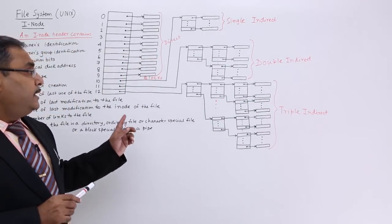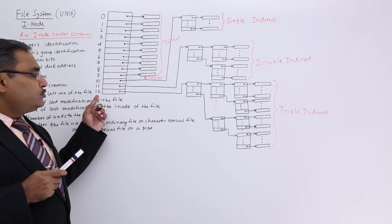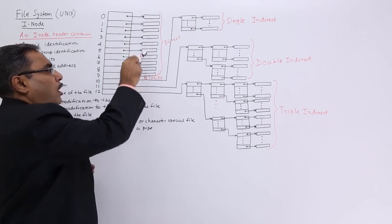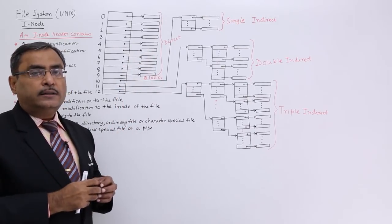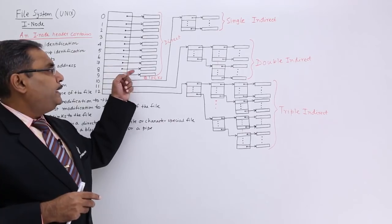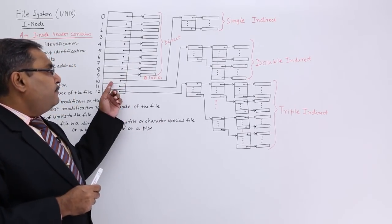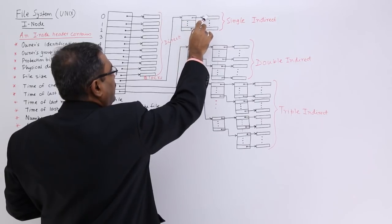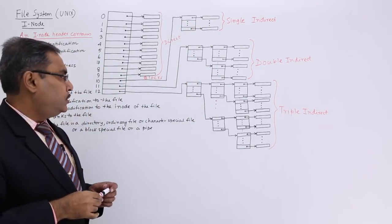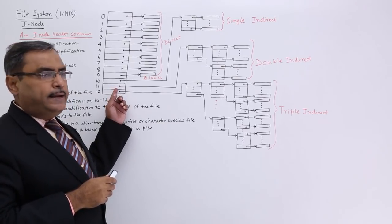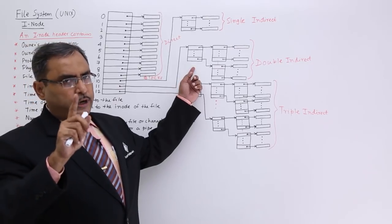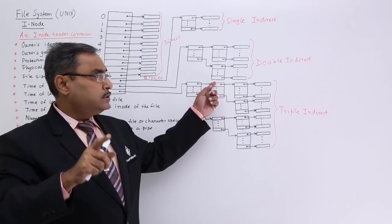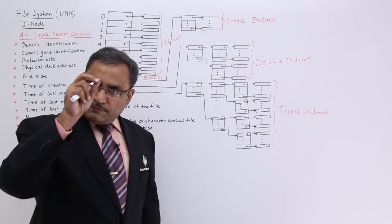The inode data structure has 13 fields numbered 0 to 12. The first 10 fields (0 to 9) contain direct block addresses — pointers directly to the blocks containing the file's data. Field 11 contains the single indirect block address, pointing to an index block which then points to the actual physical data blocks. Field 12 contains the double indirect address, pointing to an index block that points to more index blocks, which then point to the physical data blocks where the file content is stored.